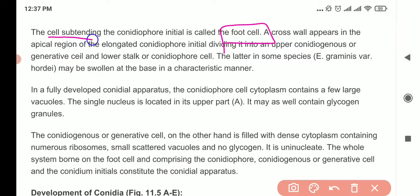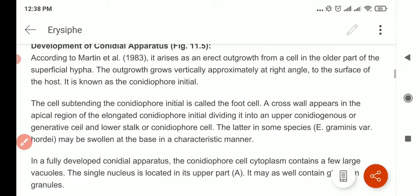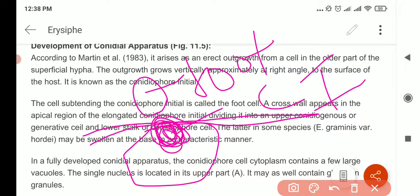The cell subtending the conidiophore initial is known as the foot cell. So this is the leaf, the host leaf, and this is the cell. Then this first cell is known as your conidiophore initial, then directly next to it is the foot. This one is the conidiophore initial, then next is the foot.